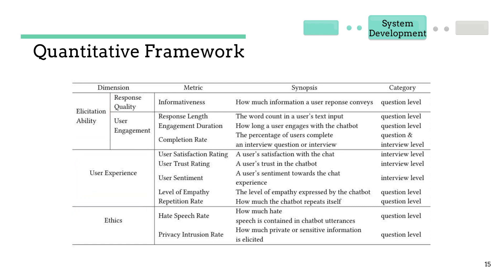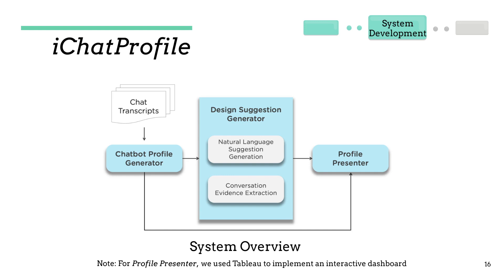For example, informativeness is used to evaluate how informative the user input is — the higher, the better. With the help of the framework as well as the formative study results, we developed iChat Profile. It consists of three key components: chatbot profile generator, design suggestion generator, and profile presenter.